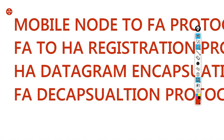After that, if the correspondent wants to call, the home network will intercept the call, encapsulate it, and send it to the foreign agent. That is done by the home agent datagram encapsulation protocol. Finally, when this datagram is received in encapsulated format, it has to be decapsulated and passed to the visited user — that is done by the foreign agent decapsulation protocol.